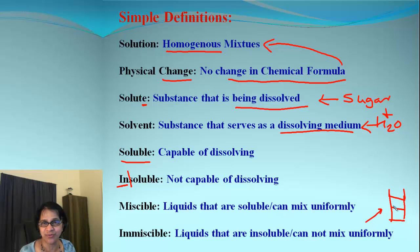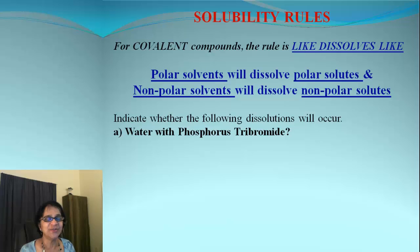Let's move on with some solubility rules. We are going to complete here the solubility rules for covalent compounds. Just to remind you, for covalent compounds, the rule is like dissolves like. When we say like, we are talking about the polarity. So if we have polar solvents and polar solutes, then we will have both of them soluble. If we have one polar and the other one is non-polar, that will not be soluble.